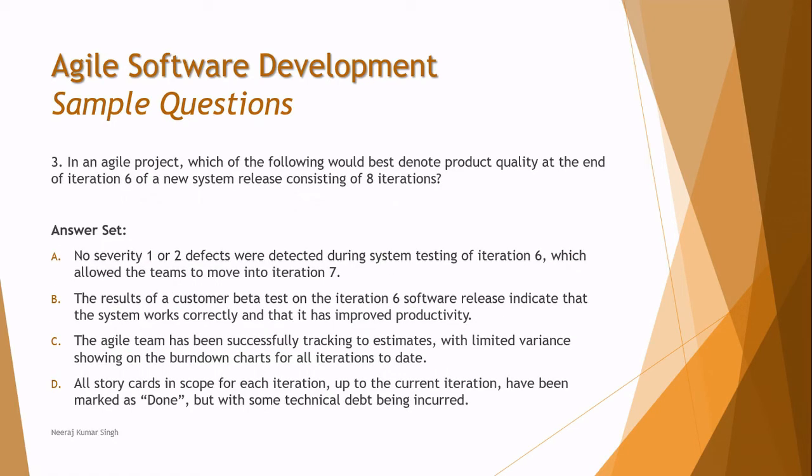Question 3: in an agile project, which of the following would best denote product quality at the end of iteration 6 of a new system release consisting of 8 iterations? The question is asking what would be the most important thing at the end of iteration 6, with two more iterations still remaining. We need to think from that angle and pick the right option.